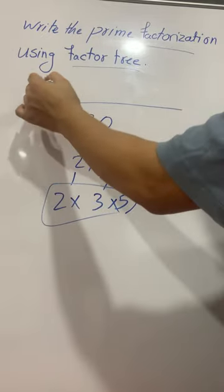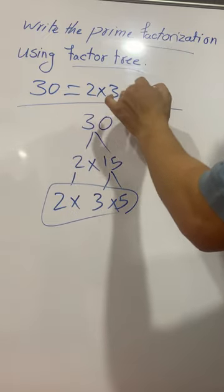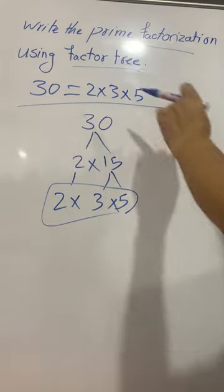To write its prime factorization I will write 30 equals 2 times 3 times 5. 2 times 3 is 6 and 6 times 5 is 30.